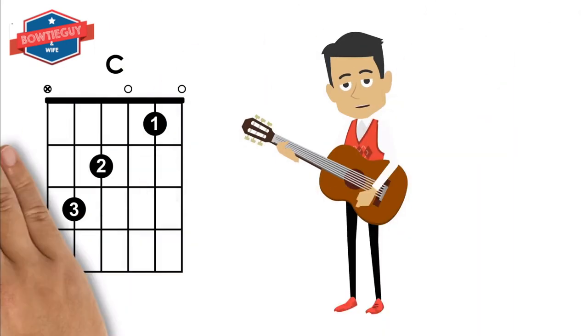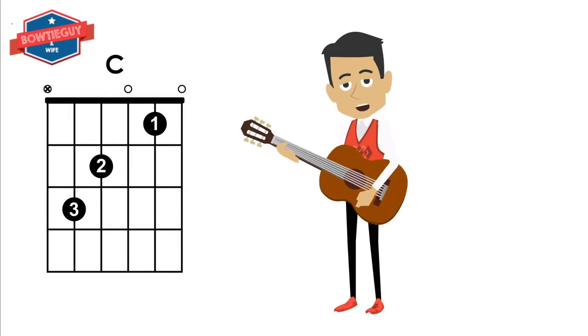Now let's talk about the C chord. Your ring finger goes on the A string on the third fret. Your middle finger goes on the D string on the second fret. And your pointer finger goes on the first fret on the B string. This is a C chord.